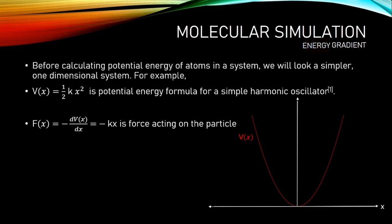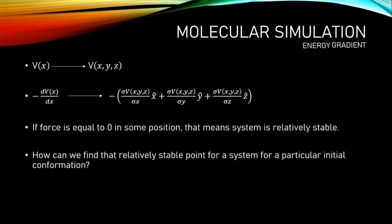This system is a one-dimensional system. In molecular simulation, our system will be three-dimensional. In here, we are simply taking a derivative. In 3D system, we are taking partial derivatives in respect to all directions. And the results of that gives us magnitude of the force and its direction. If force is equal to zero, that means the system is relatively stable. One of the most important things in simulation is to find stable conformations.